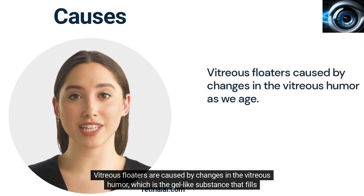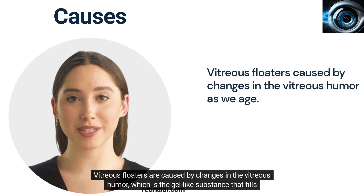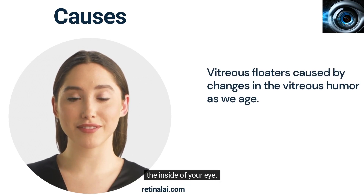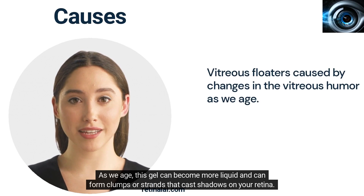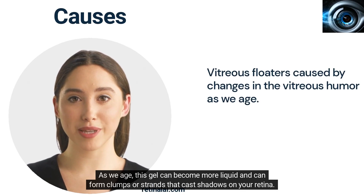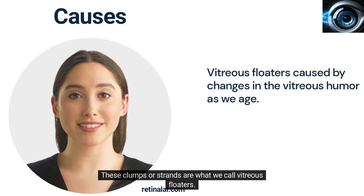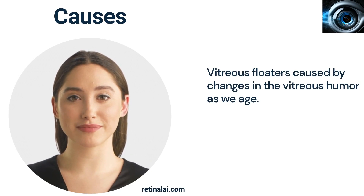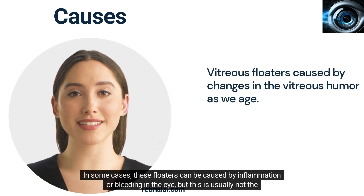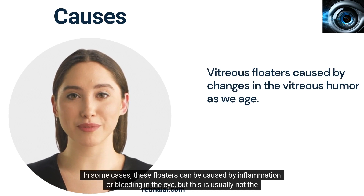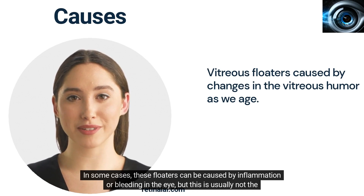Vitreous floaters are caused by changes in the vitreous humor, which is the gel-like substance that fills the inside of your eye. As we age, this gel can become more liquid and can form clumps or strands that cast shadows on your retina. These clumps or strands are what we call vitreous floaters. In some cases, these floaters can be caused by inflammation or bleeding in the eye, but this is usually not the case.